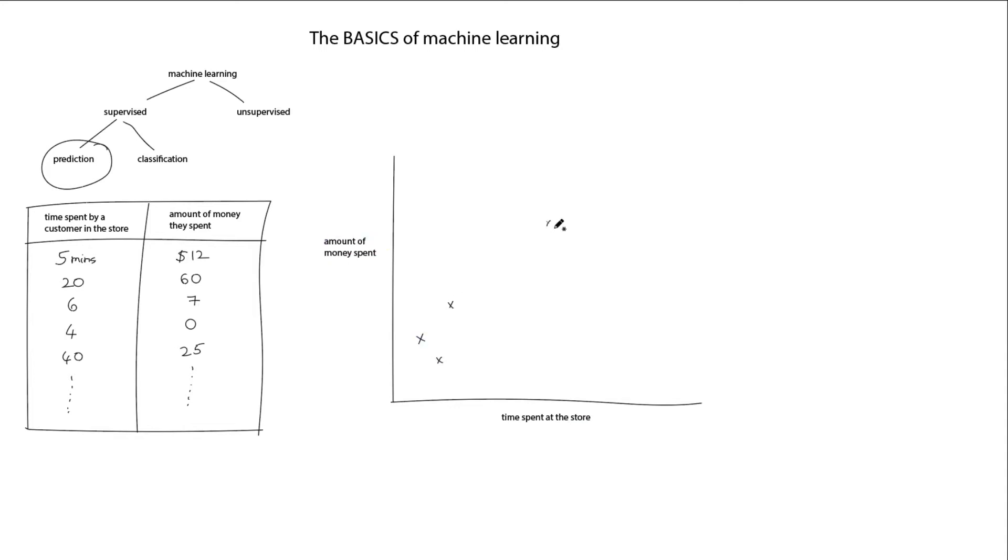One axis being the time and the other axis being the money. We might think that the relationship is linear, and so we might want to plot a straight line to indicate that. The equation of that line is y equals ax, where y is amount of money spent by any customer, x is the time they spent in the store, and a is the slope of that line.